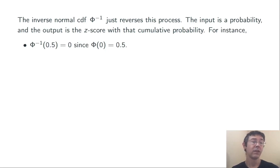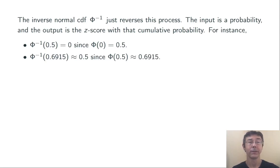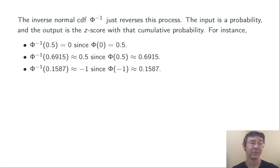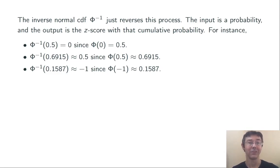For instance, phi inverse of 0.5 is 0, since phi of 0 is 0.5 — half of the probability under the standard normal curve lies to the left of z equals 0. Similarly, since phi of 0.5 is 0.6915, phi inverse of 0.6915 is 0.5. And since phi of negative 1 is 0.1587, phi inverse of 0.1587 is negative 1. We're literally just reversing the inputs and outputs in these two functions.